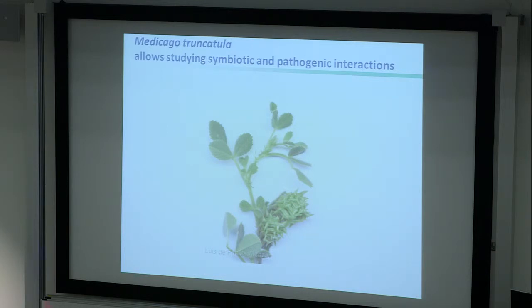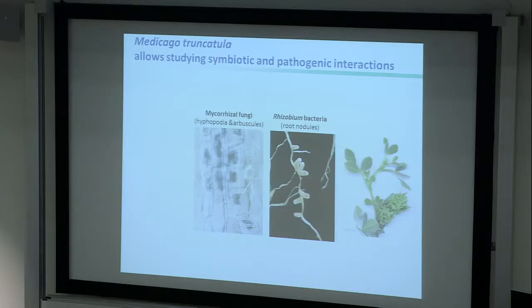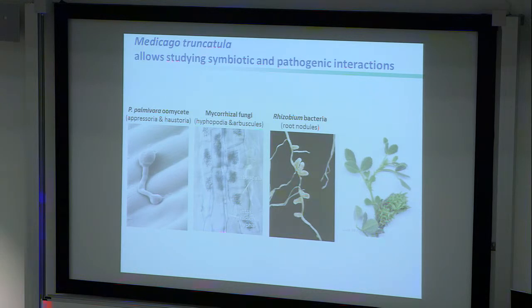Let me start with Medicago truncatula, a legume with extensive research on symbiosis. It has two well-studied symbioses: root nodule bacteria — the nitrogen-fixing Rhizobium — and arbuscular mycorrhizal fungi. Both interactions take place in the roots and require the plant to take up microorganisms into its tissue. Researchers have identified mutants that prevent these interactions, giving us a large loss-of-function screen. We can use this to check whether symbiosis processes overlap with pathogen colonization of the same plant.